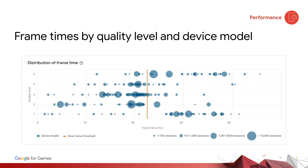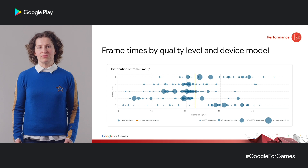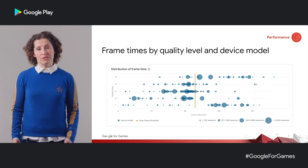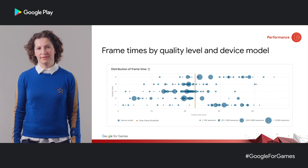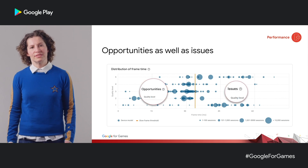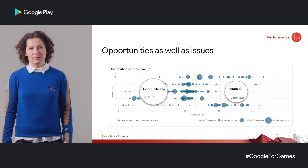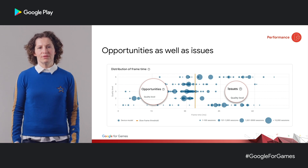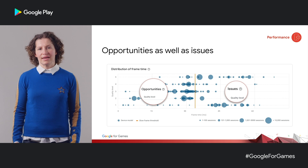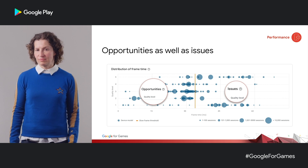I've spoken about issues and how you can address underperforming devices or game scenes. But to deliver the best experience to your users, you also want to know that you're making full use of their device capabilities. What if some of your users are not seeing those water reflections and vegetation right now, but you could turn them on without any performance impact? This is where opportunities come in. Just as with issues, you can drill down to understand device specs, impact, and GPU performance so you can prioritize and optimize.